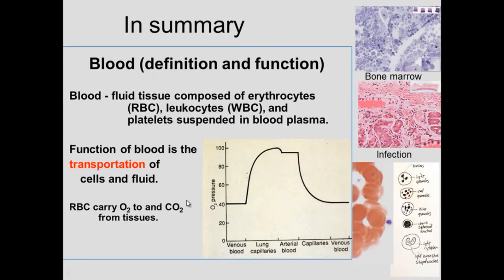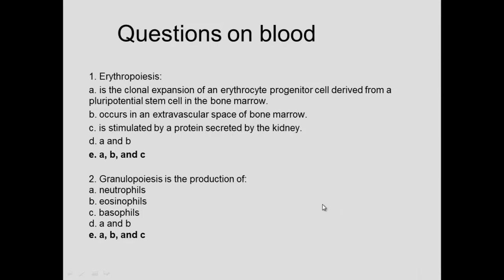In summary, blood is fluid and cells. Cells provide oxygen, they provide the immune system, and platelets prevent loss of blood through the clotting process. This occurs in bone marrow, and in affected states a lot of white blood cells are produced. We can identify those cells in blood — there are red blood cells and platelets, and we can see a lobulated nucleus, a non-lobulated nucleus, or a horseshoe shape.